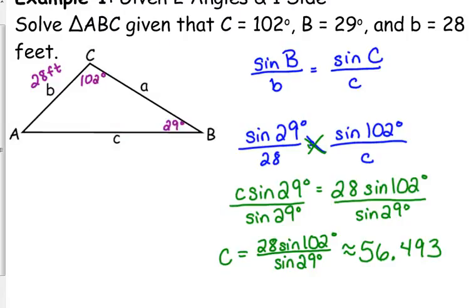Gives us that side c is approximately 56.493. And they gave us units on this one. They said feet. So we'll label that with feet.